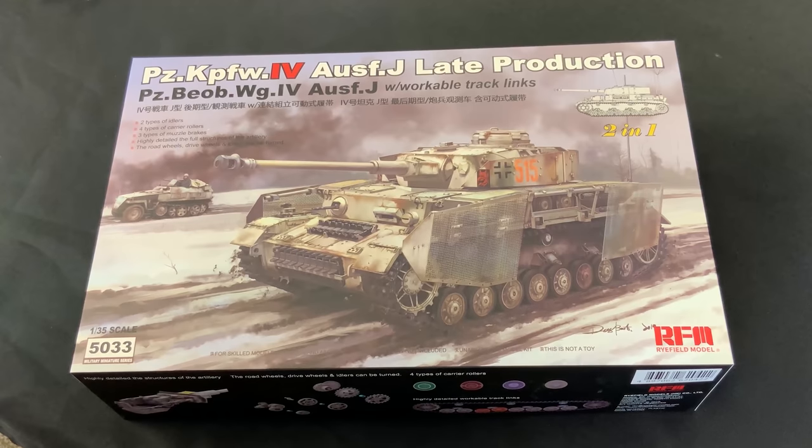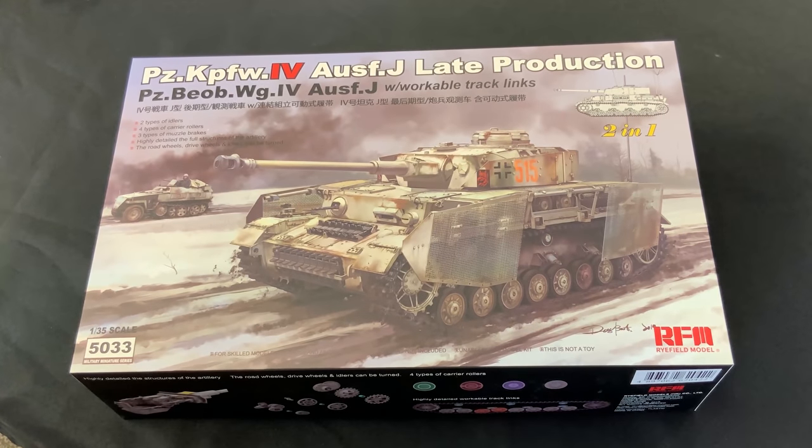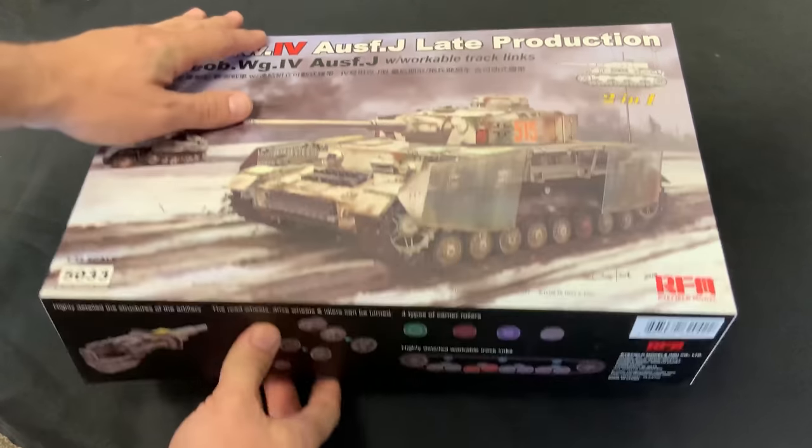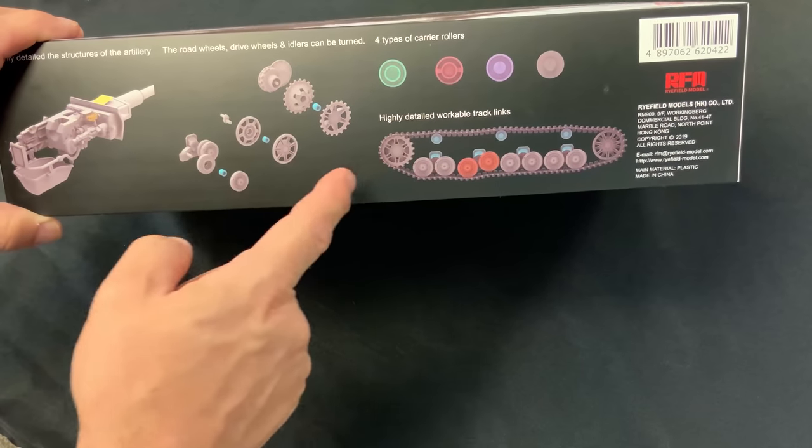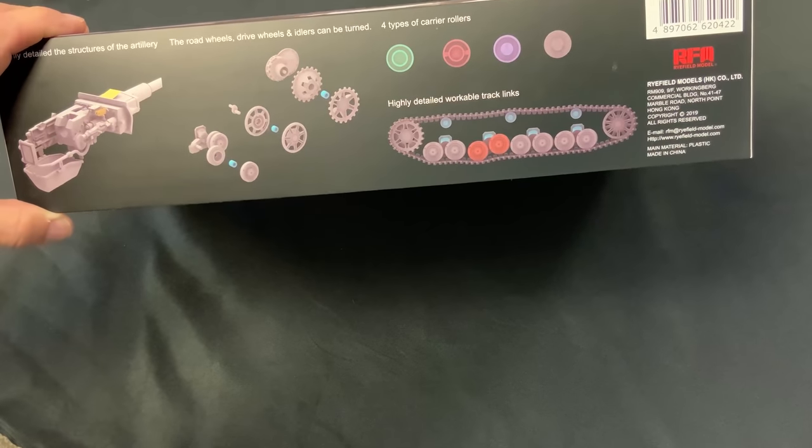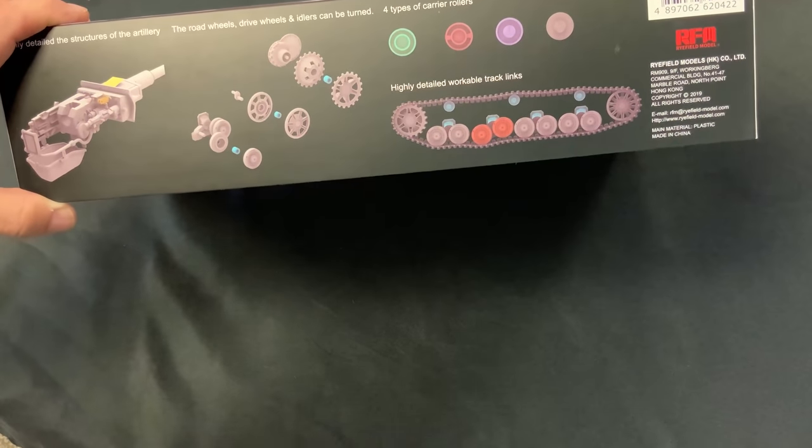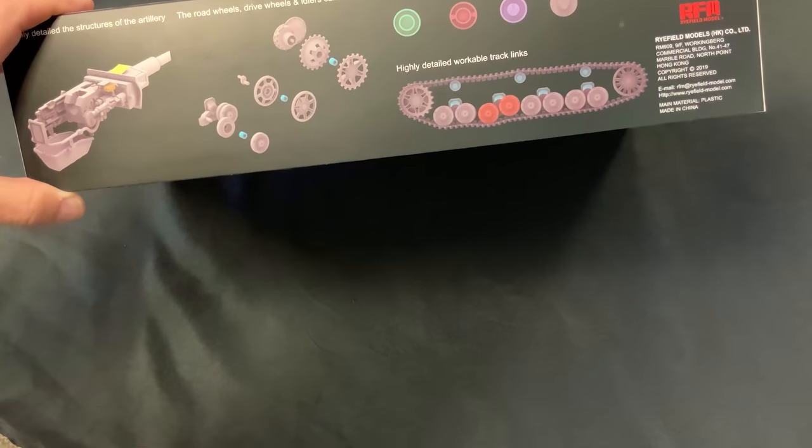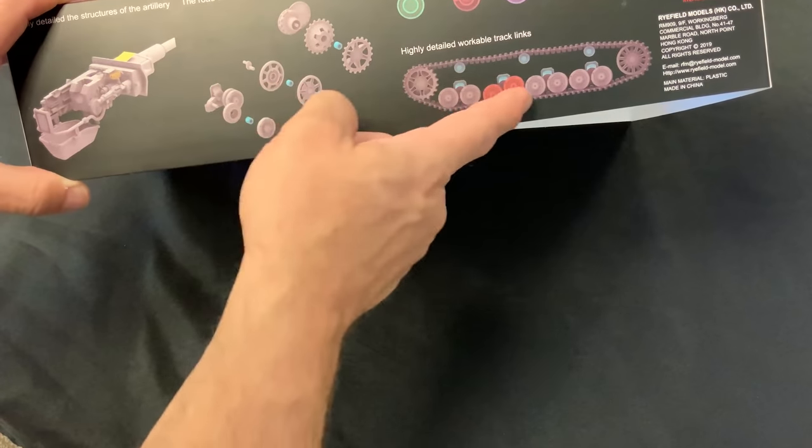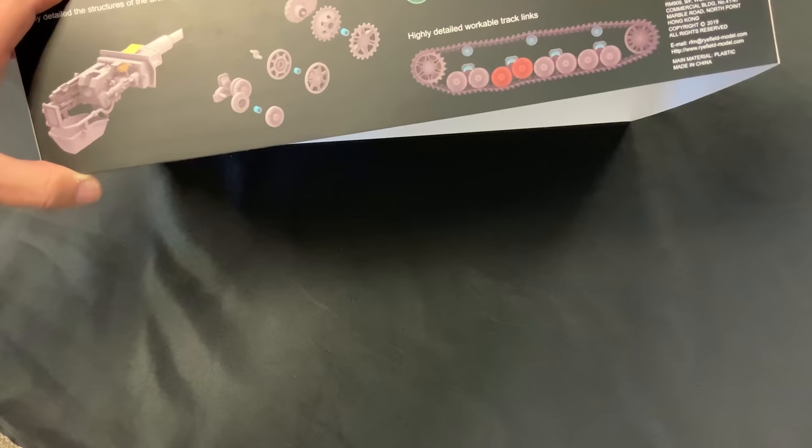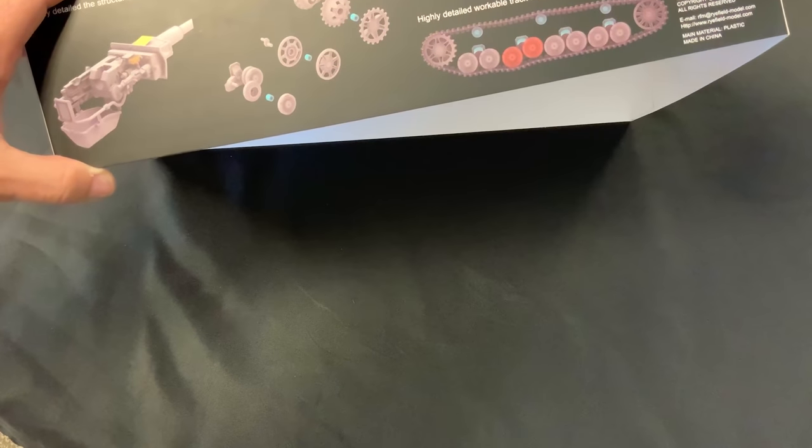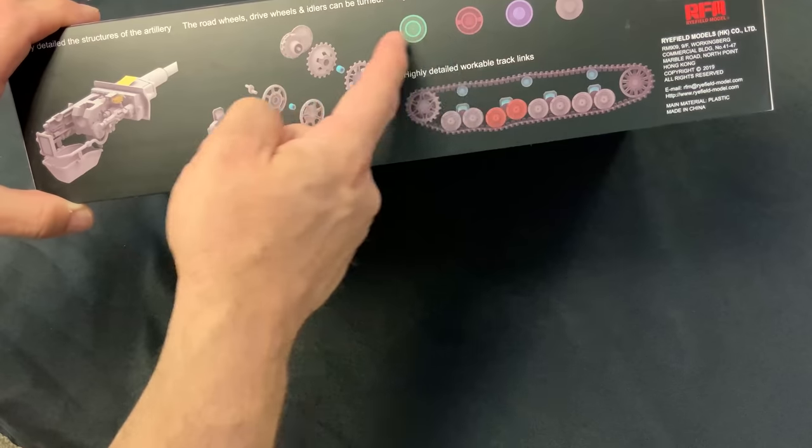Okay guys, let's take a look at the Ryfield Model Panzer IV J late production. This is a kit that has complete workable tracks as well as workable suspension. So if you want to put this in some kind of action pose, like on a diorama going over railroad tracks or going over bumps and rocks, things like that, you can actually change the suspension around and make it look like it's more of an action scene as opposed to just sitting on a flat surface.